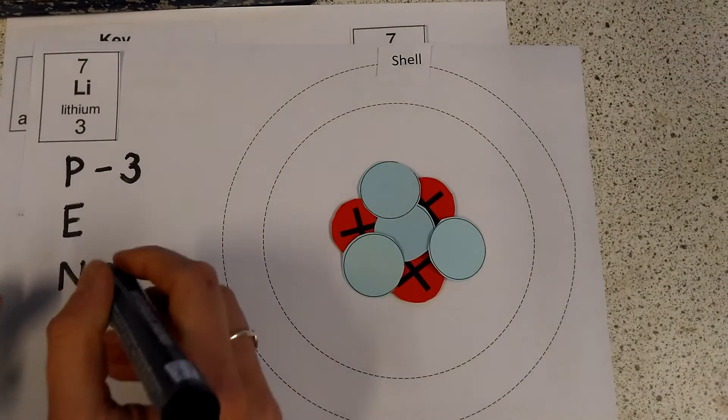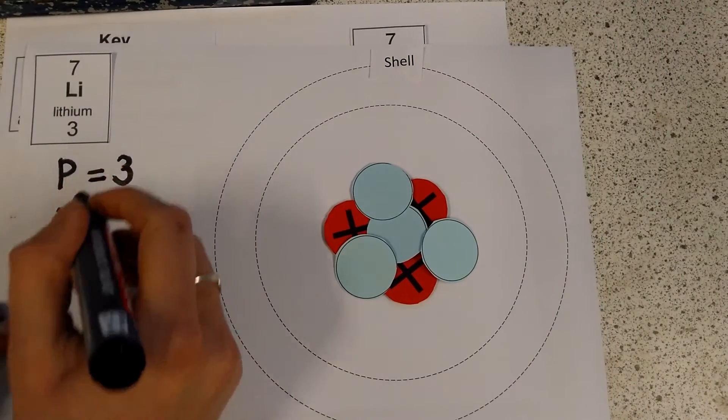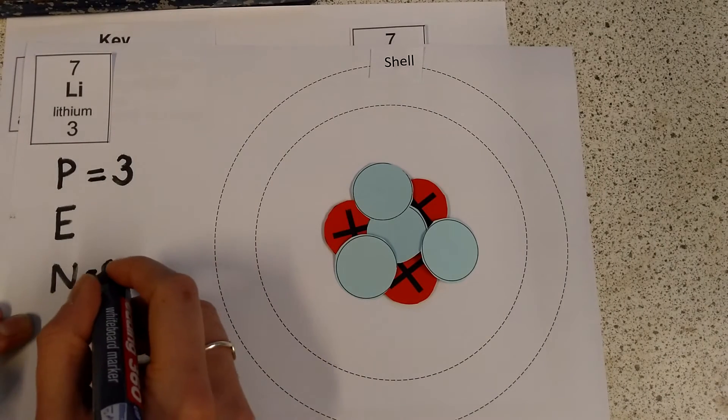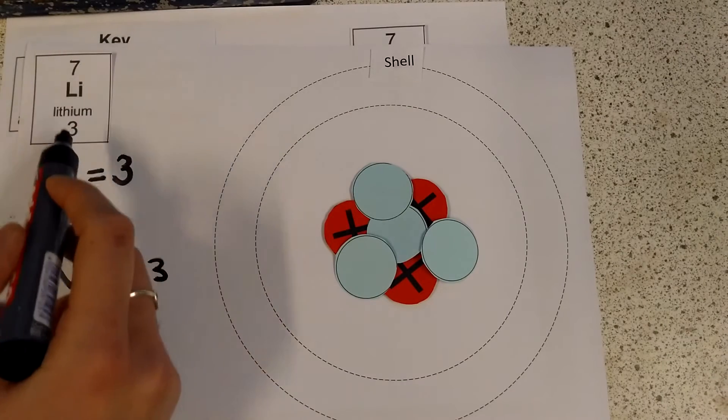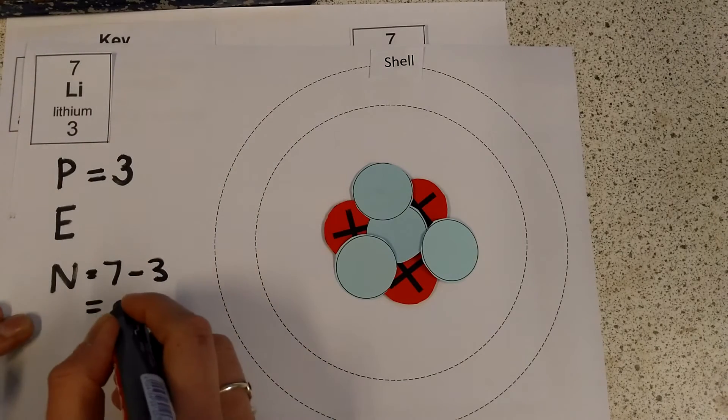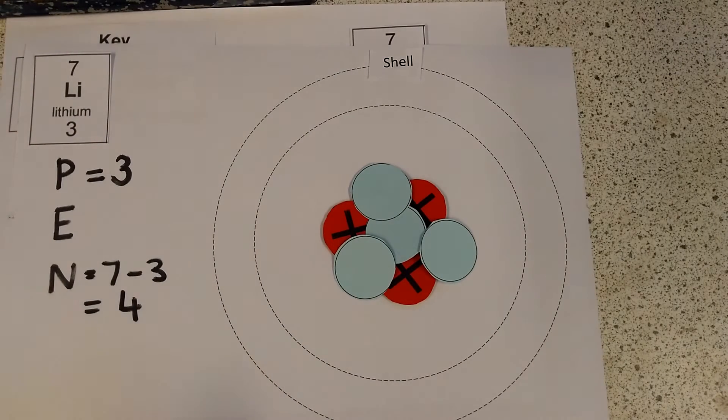So here I'm going to write myself a little sum just in case I forget a little bit later when it gets a bit harder. I'm just going to say that I did 7 take away 3, so this 7 from here and this 3 from here, and that gave me a total of 4 neutrons.